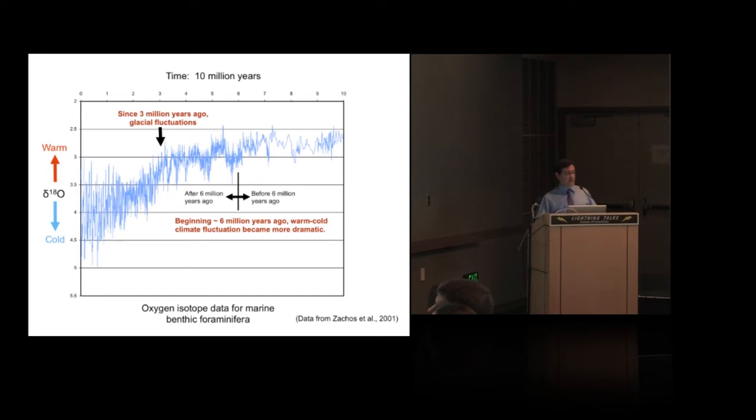By 3 million years ago, glacial fluctuations between very warm and very cold climates occurred. And our genus, the genus Homo, evolved during the strongest fluctuations.